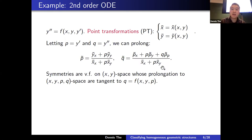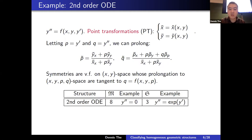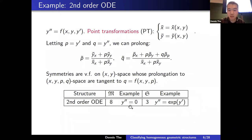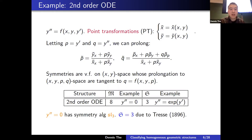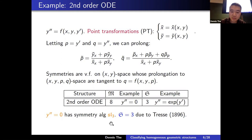Symmetries are vector fields on the original xy-space whose prolongation induces action on the xy,p,q space tangent to the submanifold q = f(x,y,p). The maximum symmetry dimension for this class is eight, achieved by the simplest equation y″ = 0. But there is a large gap: the submaximal symmetry dimension is three. The symmetry algebra of y″ = 0 is the semisimple Lie algebra sl₃. This gap was studied long ago — the submaximal dimension three is due to Tresse from 1896.